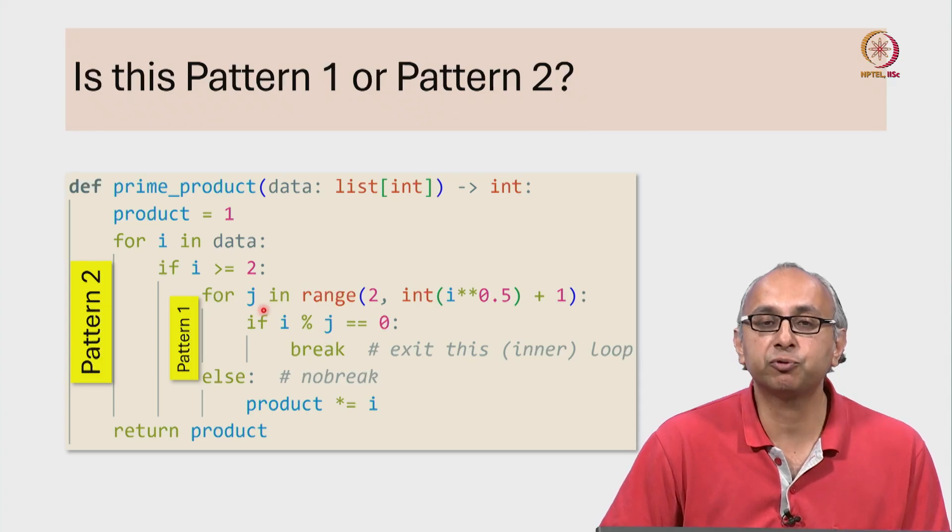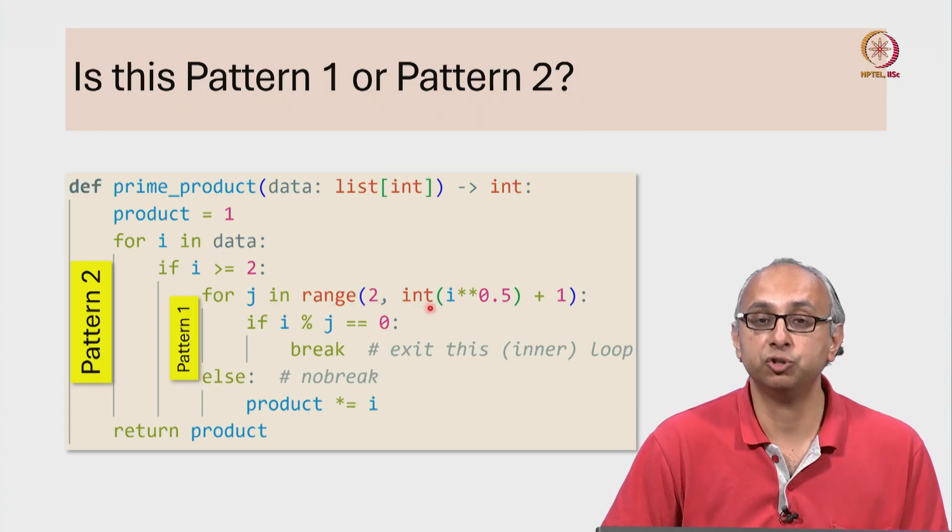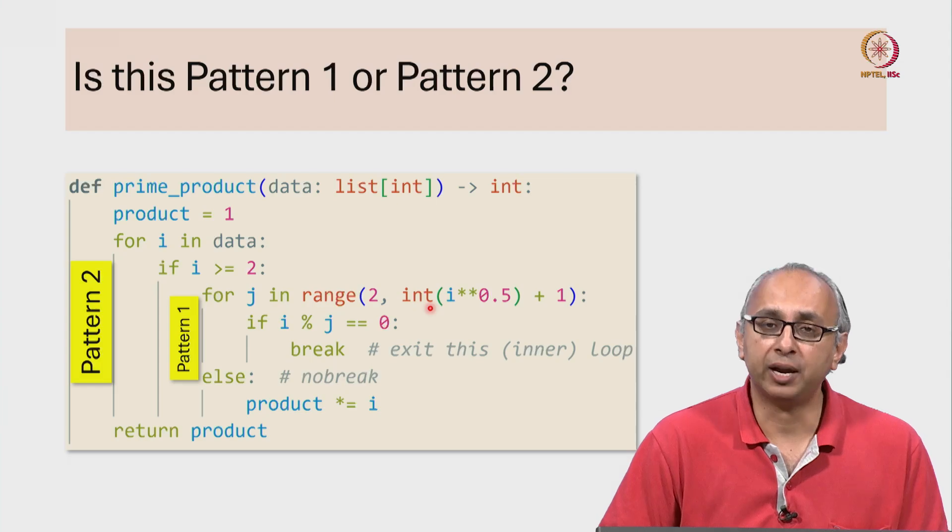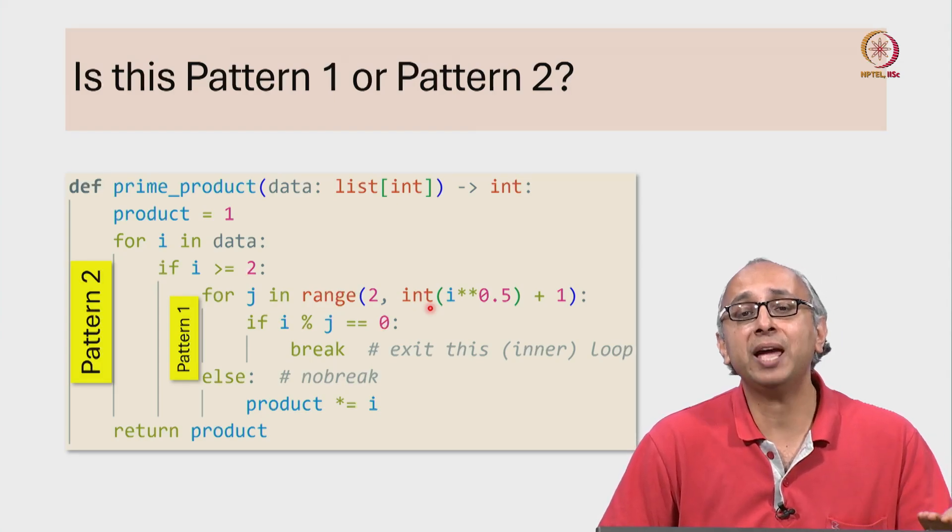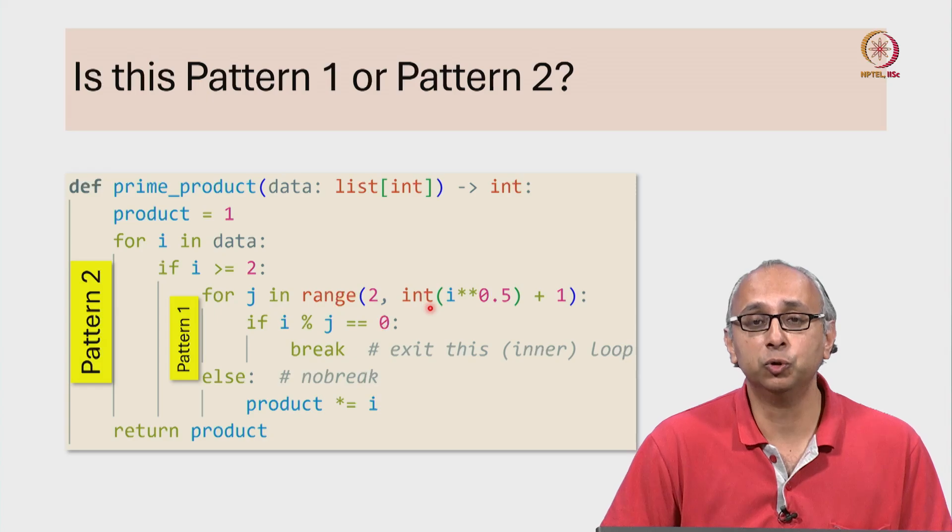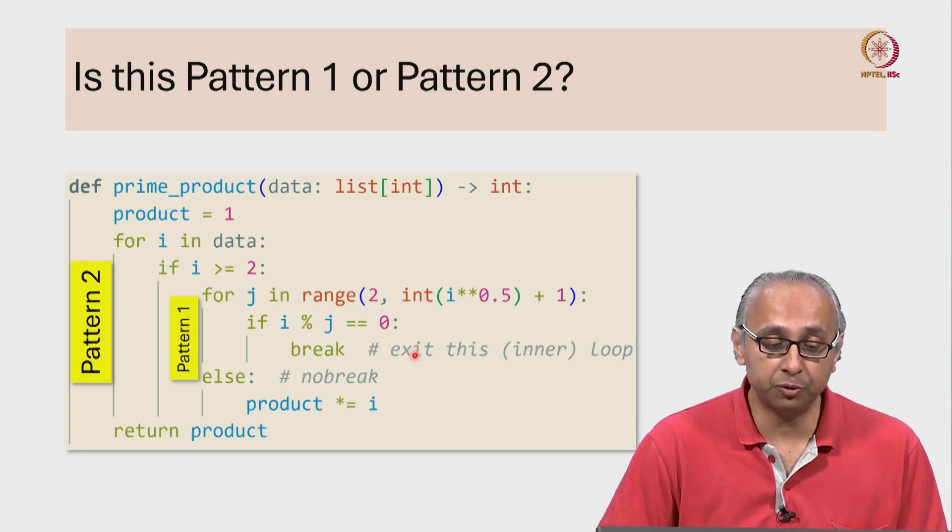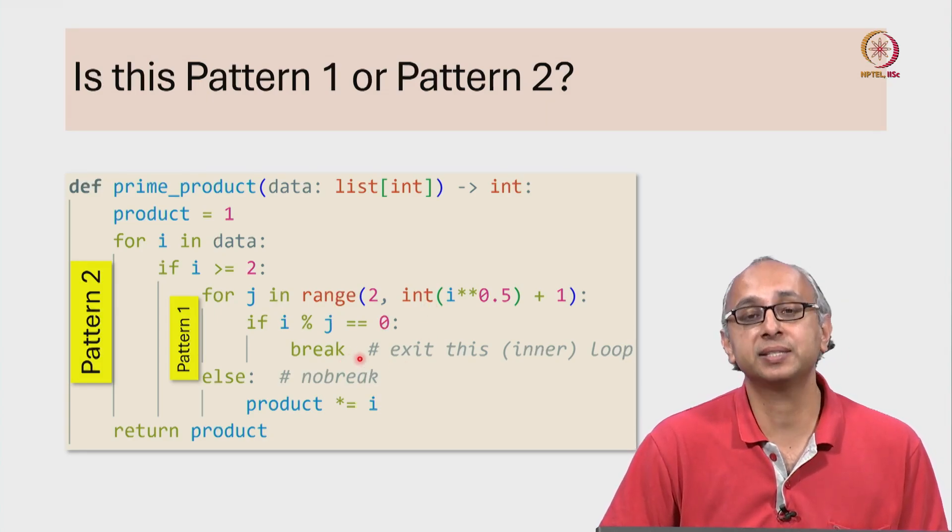In that case we would have tried all these different values of j and finally when there were no more values of j to try, we would have exited the loop normally without ever encountering this break statement.